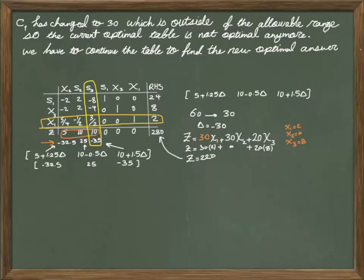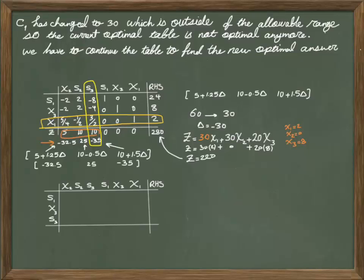Then I have to implement a minimum test and find the entering and exiting decision variables this way and do the iteration. I don't explain the details of it because I expect by far you know how to implement the simplex table.